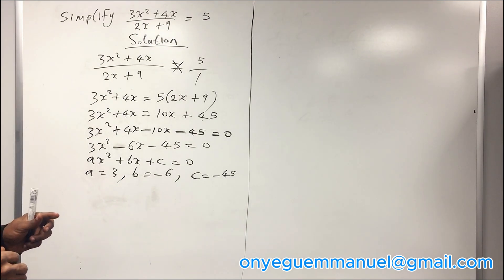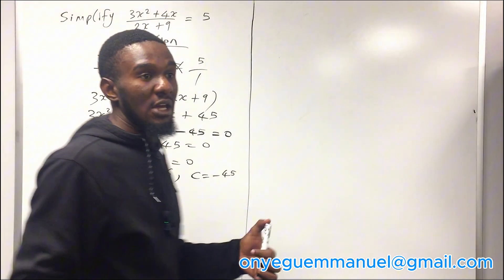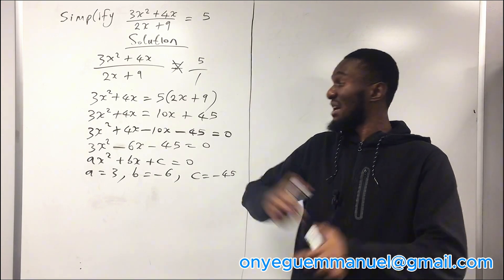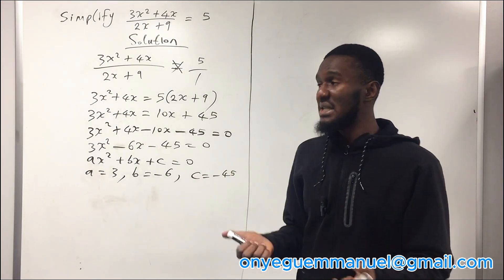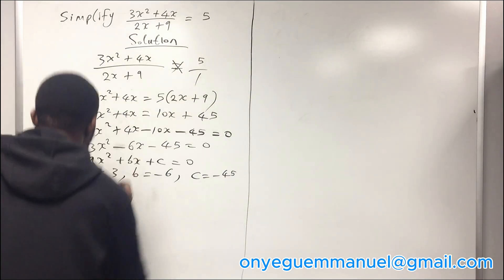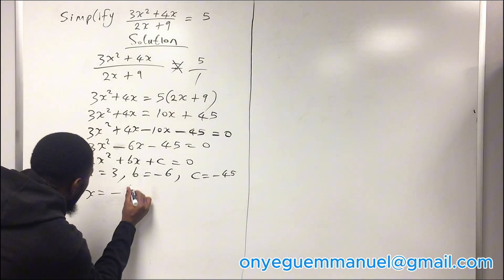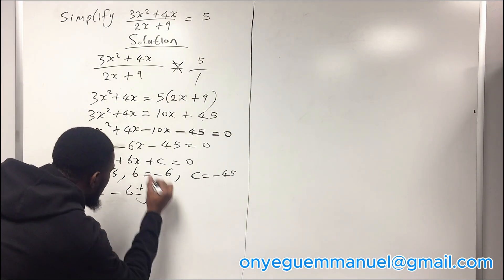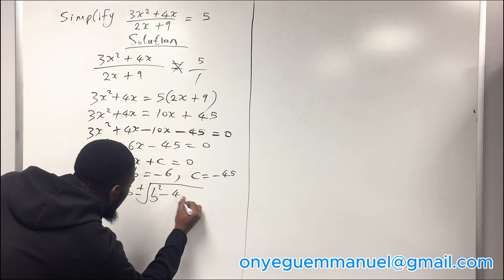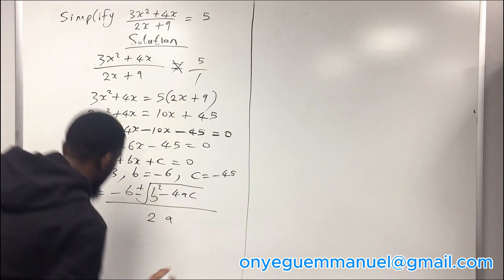Solving this quadratically, you can either solve using factorization method or using the general formula, but I prefer using the general formula, which is x equals minus b plus or minus square root of b squared minus 4ac over 2a.